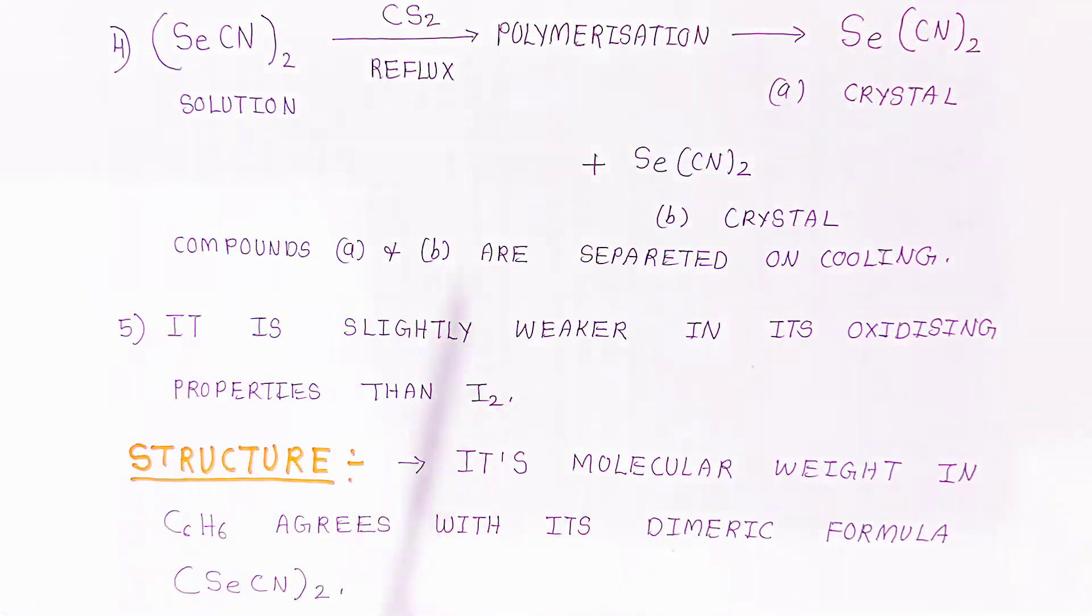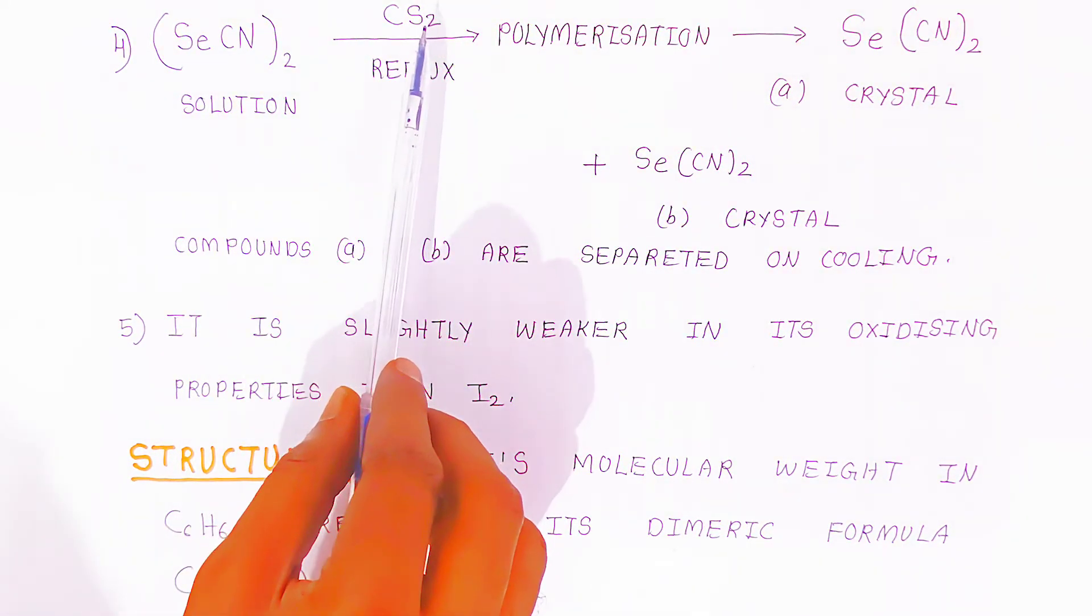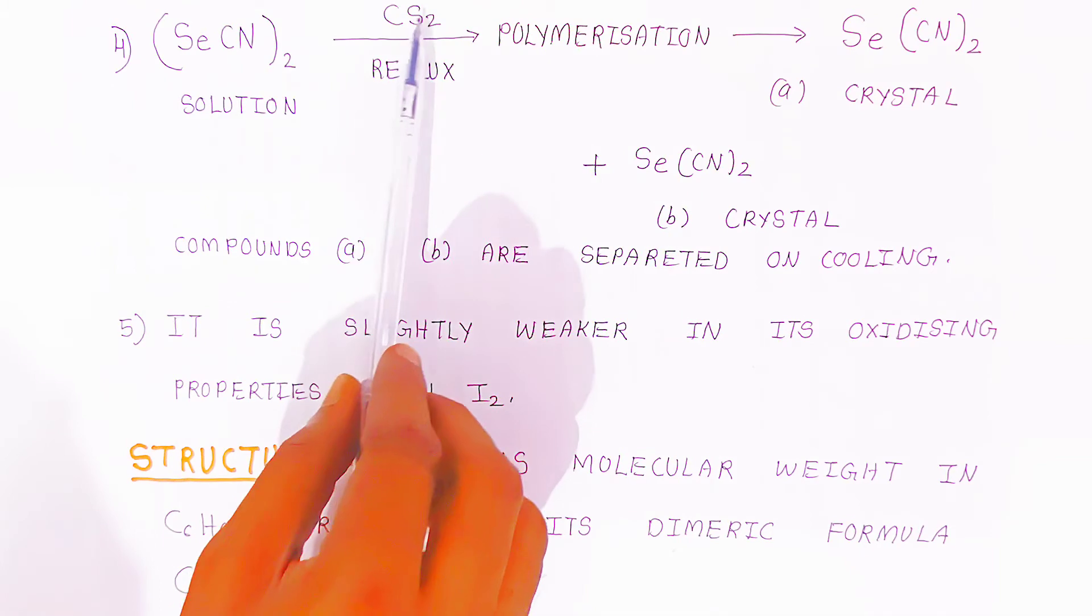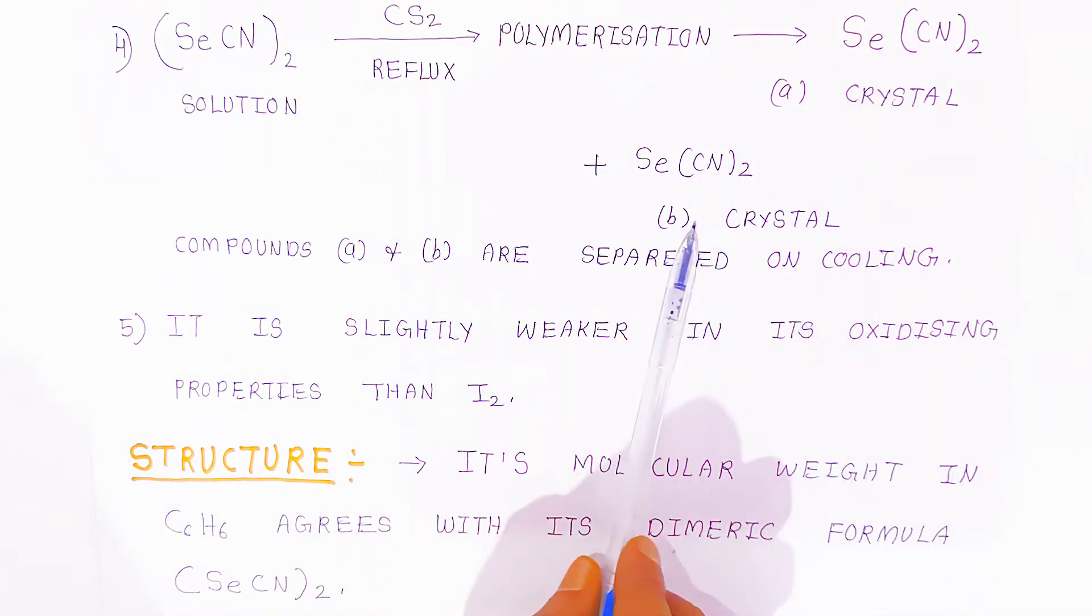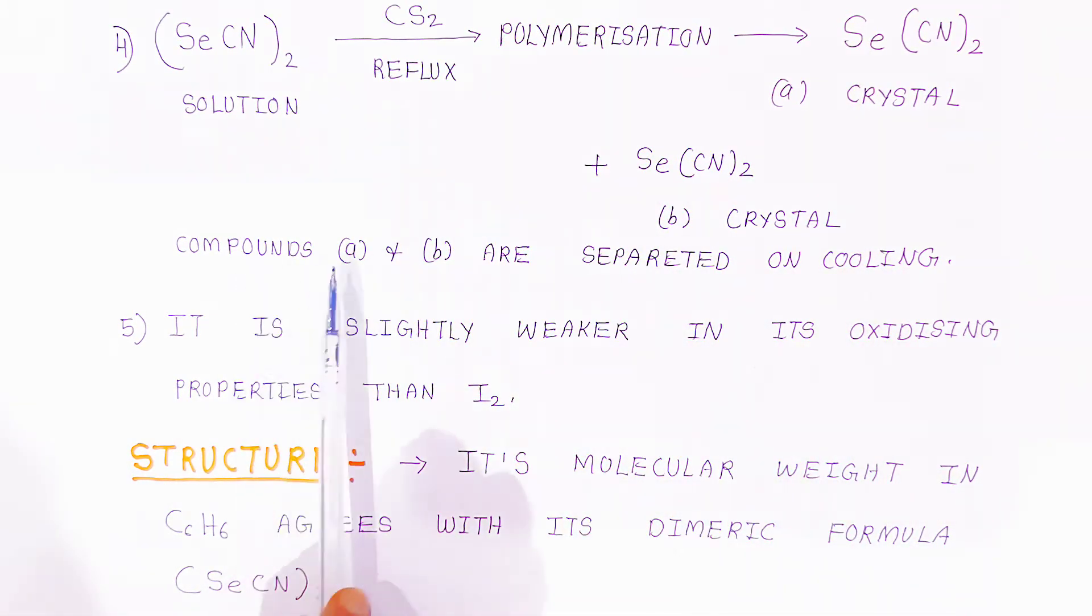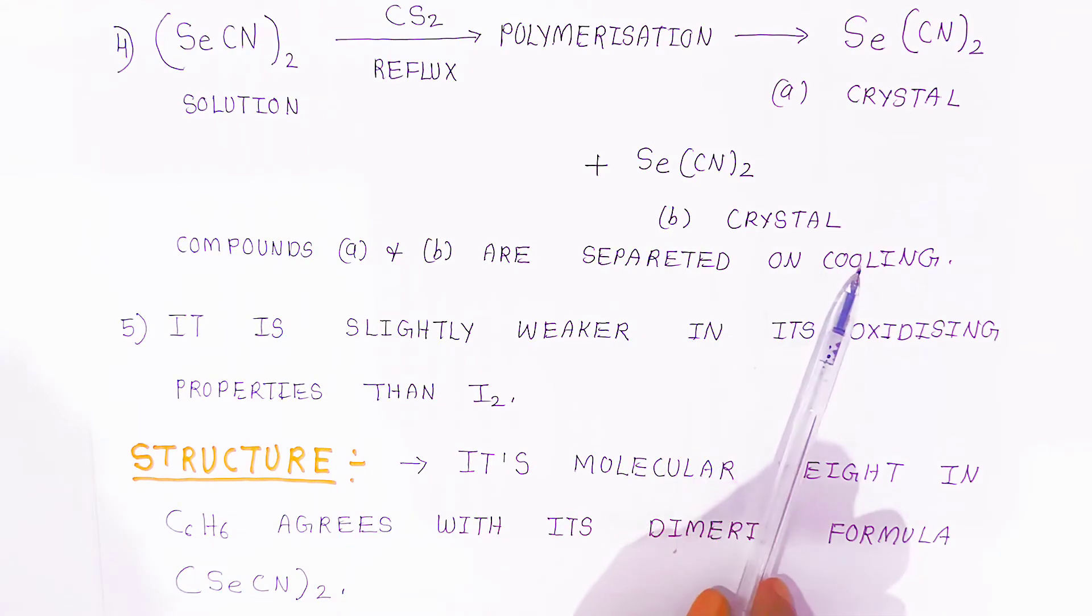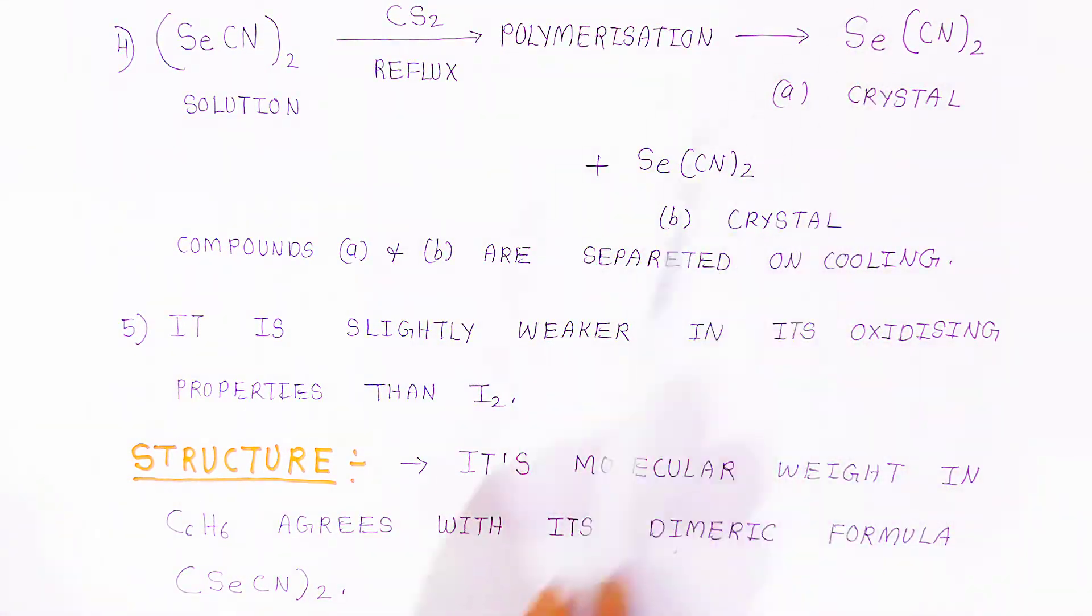Selenocyanide solutions in presence of carbon disulfide reflux will polymerize and give crystals, two types of crystals of selenocyanogen: A crystals and B crystals. Compounds A and B are separated on cooling. It is different types of crystals.